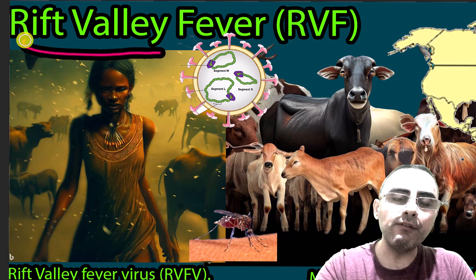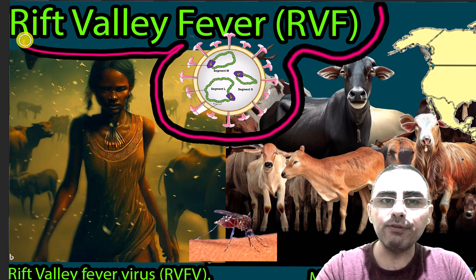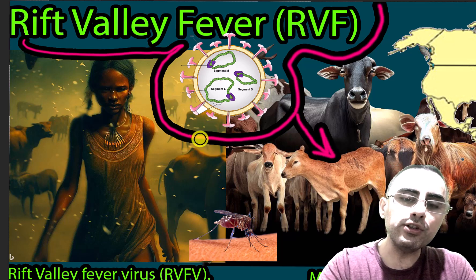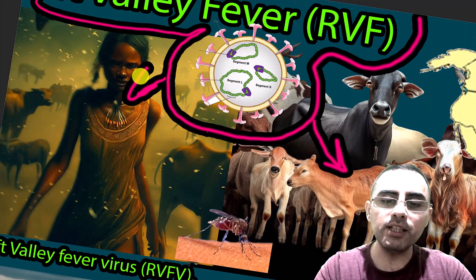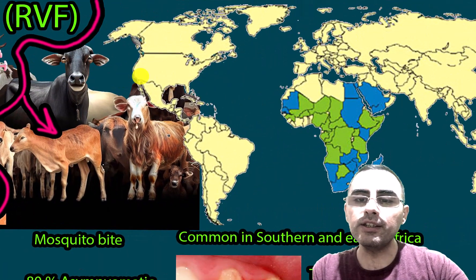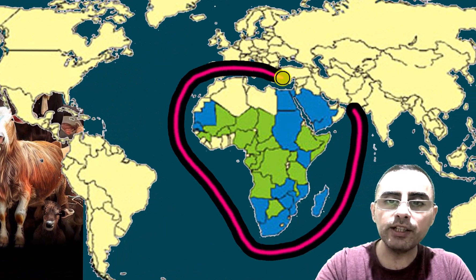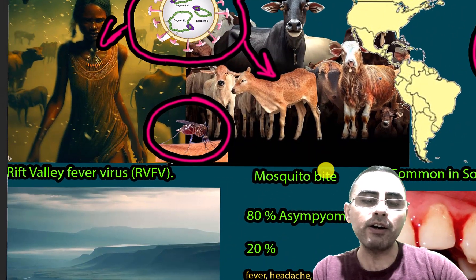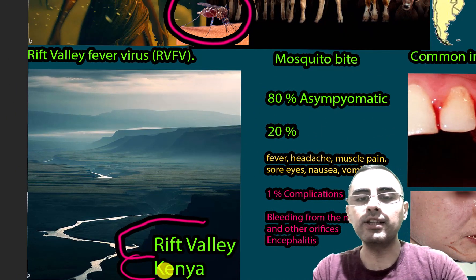Rift Valley Fever is an infectious disease caused by the Rift Valley Fever virus. It usually infects livestock but it can also infect humans, and in humans it is most commonly transmitted by mosquito bites. The endemic area is Africa, especially southern and eastern Africa. It was first described in the Rift Valley region in Kenya, which is why it has that name.